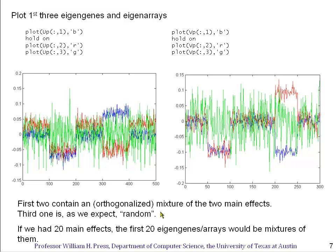That's the good news. The third one is, as we expect, random. And in fact, if we had 20 main effects, and they were approximatable by linear directions through the origin, we would find them largely contained in the first 20 eigengenes or eigenarrays. However, as mixtures, and that's the part that I'm always skeptical about. How do you sort out those mixtures once you've done the dimensional reduction?